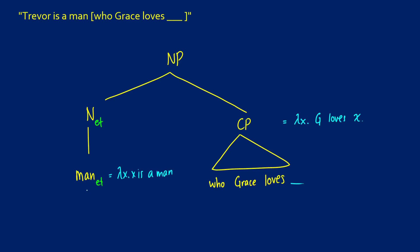So when we want to join these together, we can do it with predicate modification. So that would say that the CP is of type ET as well, which means our NP will be type ET. This will be lambda x dot x is a man and g loves x.